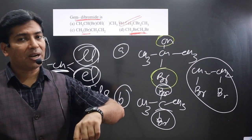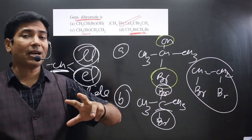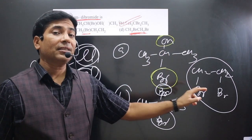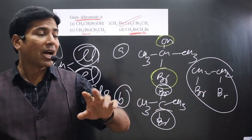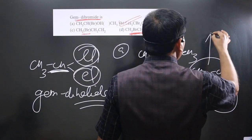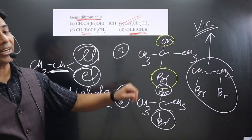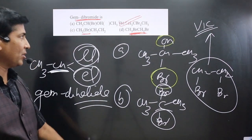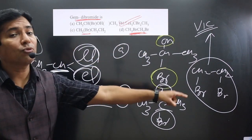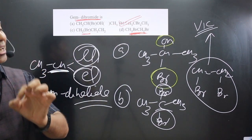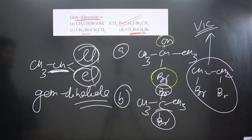In option D, the two halogens are connected to adjacent carbons, and if this kind of situation is there, it is called vicinal dihalide — we say it is not gem dihalide, it is vicinal dihalide. So option D represents vicinal dihalide and option B represents gem dihalide. If you like this video, please share and subscribe to the channel.